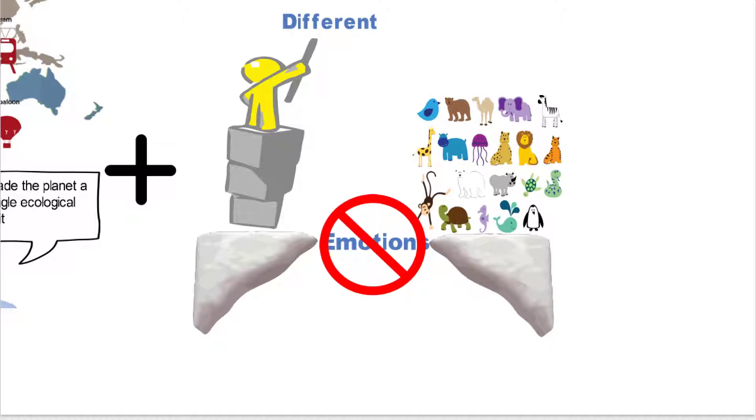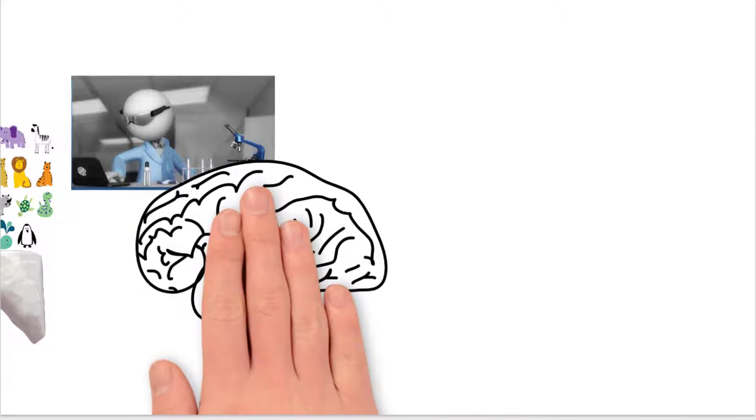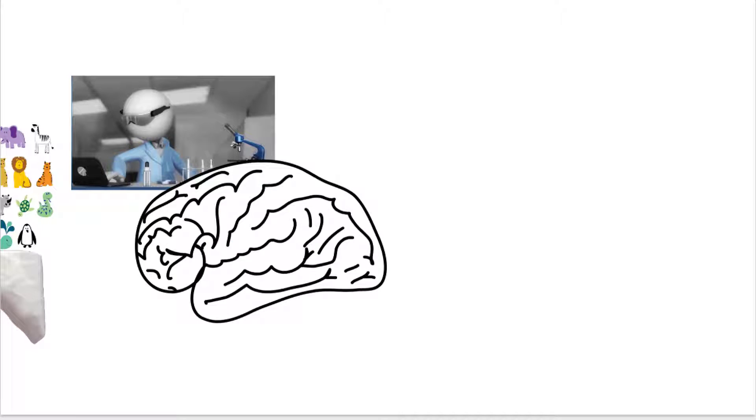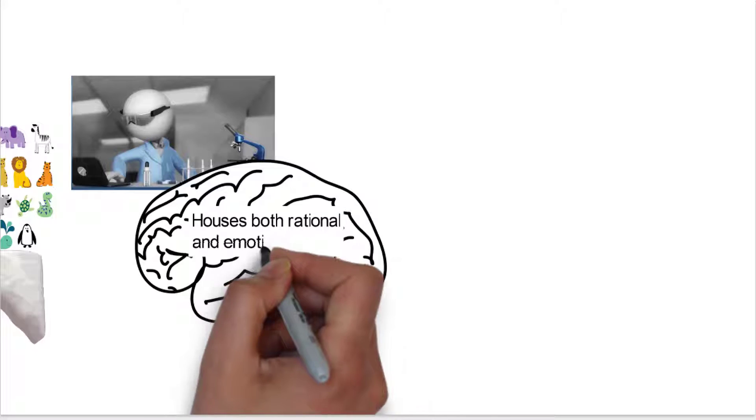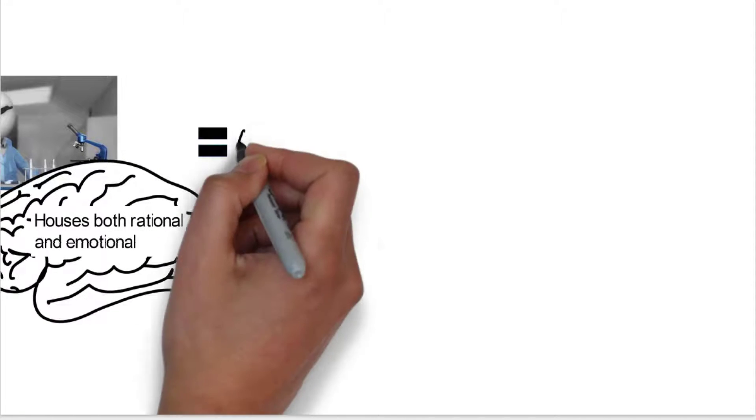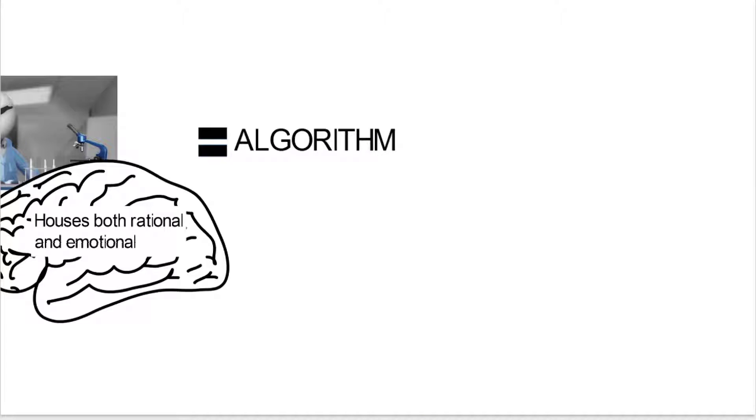However, the idea of emotions making us different really didn't hold up to scientific investigation. Because once the science started doing investigation on the brain, they basically found that the brain houses both the rational and the emotional, and that it can be tied to algorithms. And this is really an important idea, the whole idea of algorithms, which we'll talk about more and more.